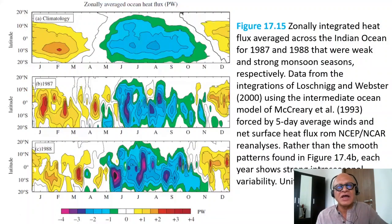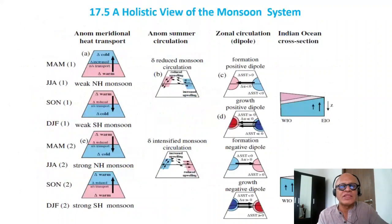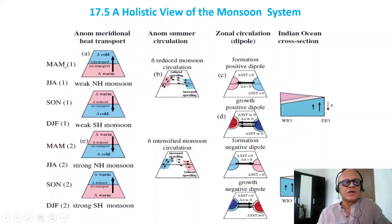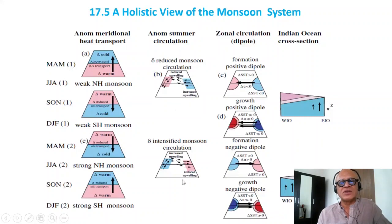Leaving that idea behind, maybe there is a way to pull this all together. This is what the book calls a holistic view of the monsoon system. You have to convince yourself that this works for you, because this is a hypothesis proposed by the author. It looks at anomalous meridional heat transport starting with one year pre-monsoon season and going into the winter of the following year. This is the anomalous circulation associated with those patterns, looking for this biennial variability to complete the holistic monsoon story.